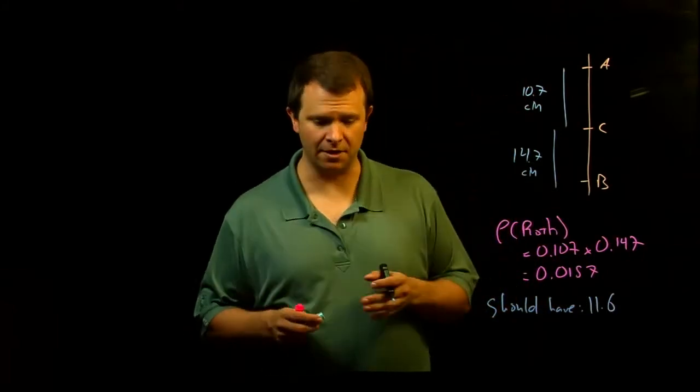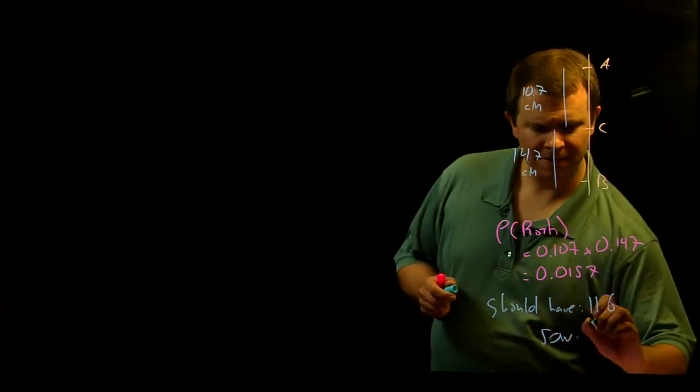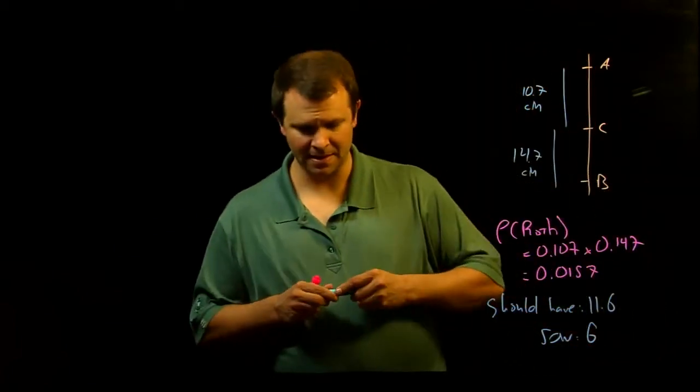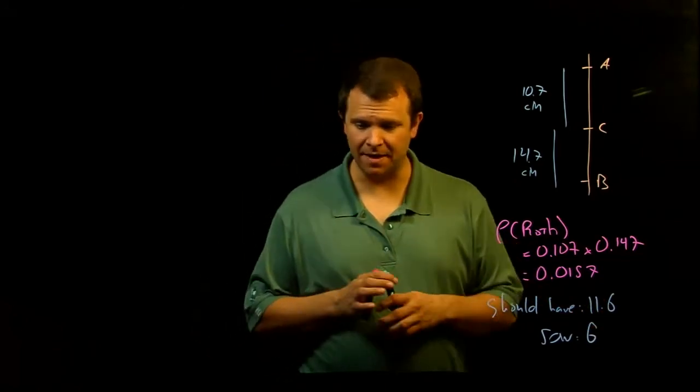We should have seen 11.6 double crossing overs, but we only saw six of them. What happened? What explains this disparity?